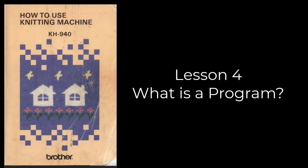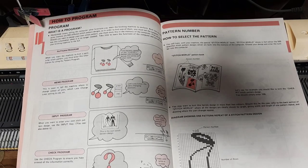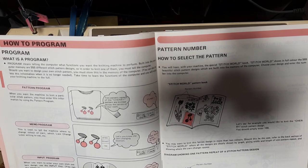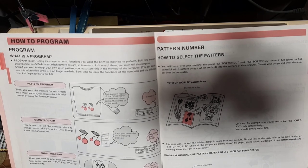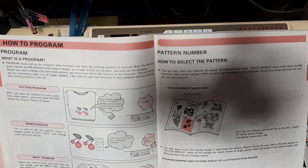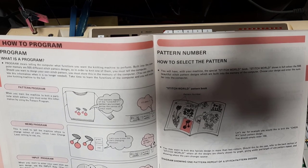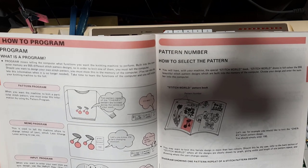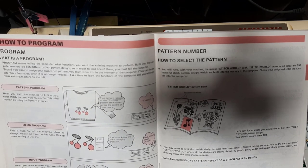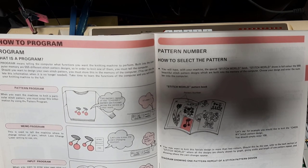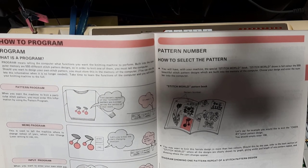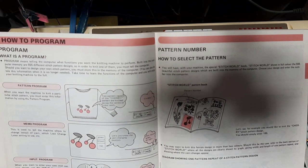This is lesson four: what is a program? A program means telling the computer what functions you want the knitting machine to perform. Built into the computer memory are 555 different stitch pattern designs. In order to knit one of them, you must tell the computer. If you want to design your own stitch patterns, you must store them in the computer memory. You can also delete this information when it's no longer needed.